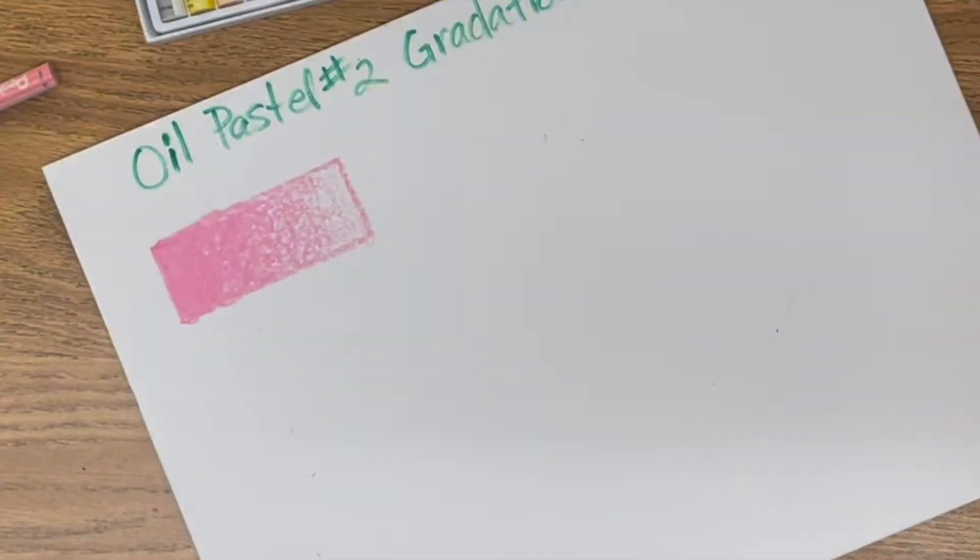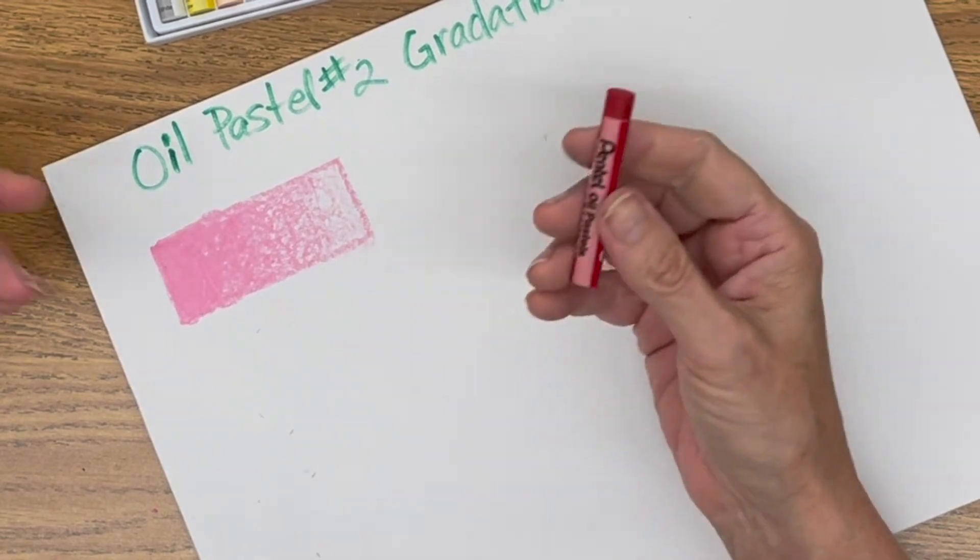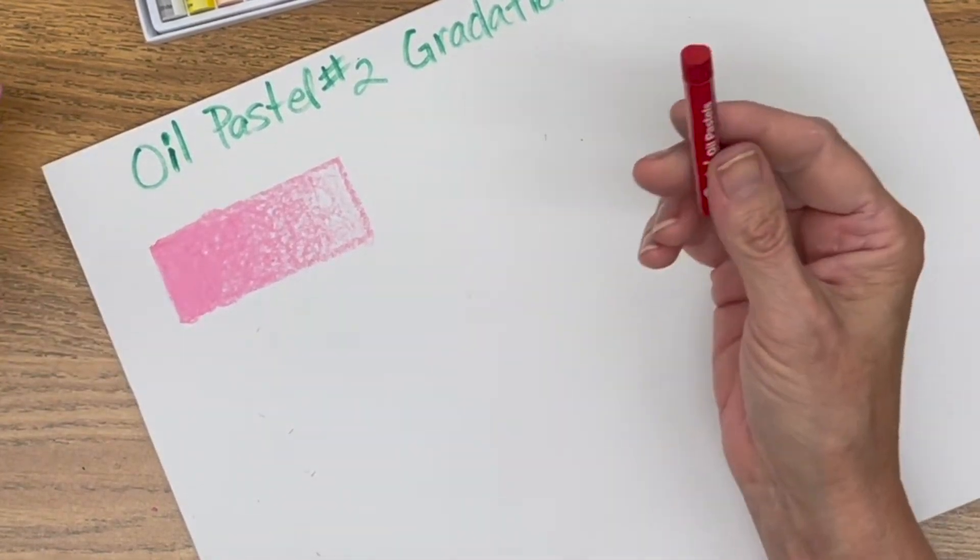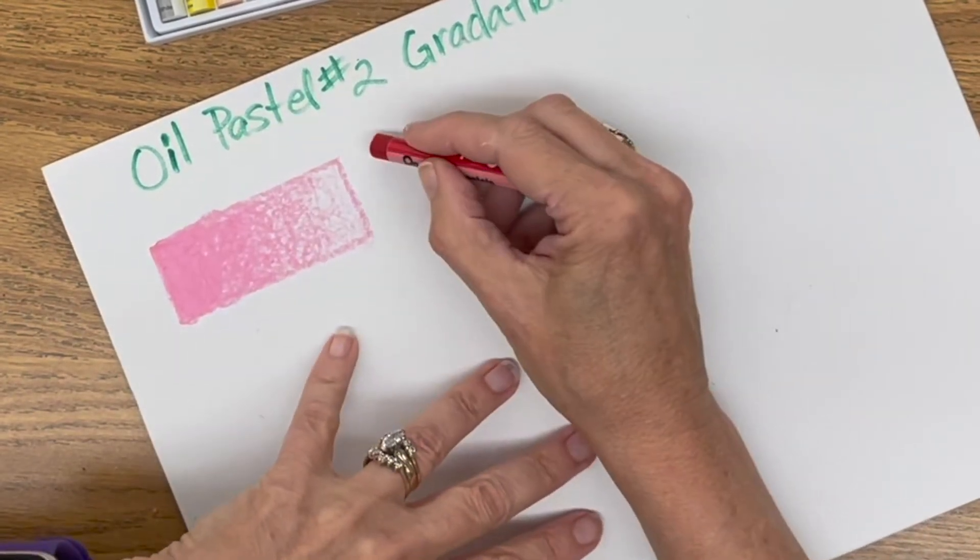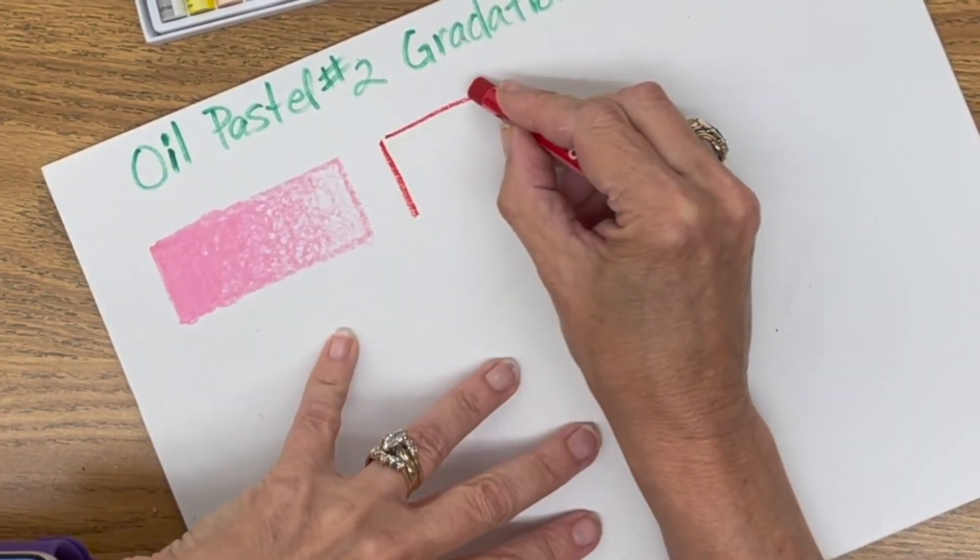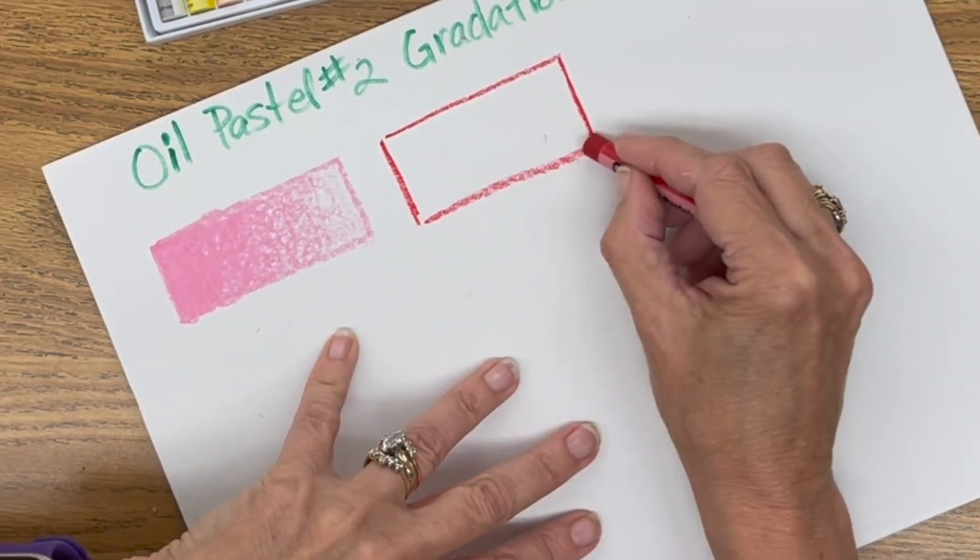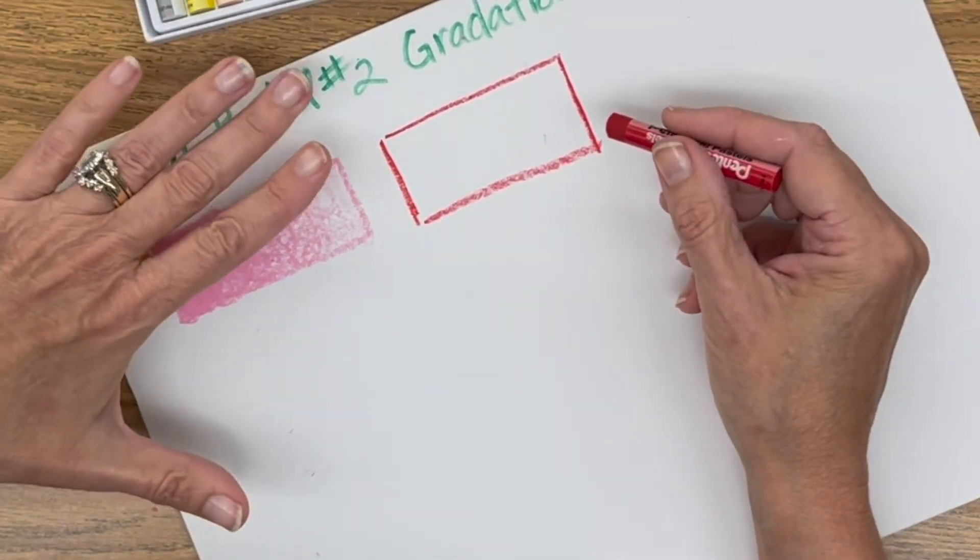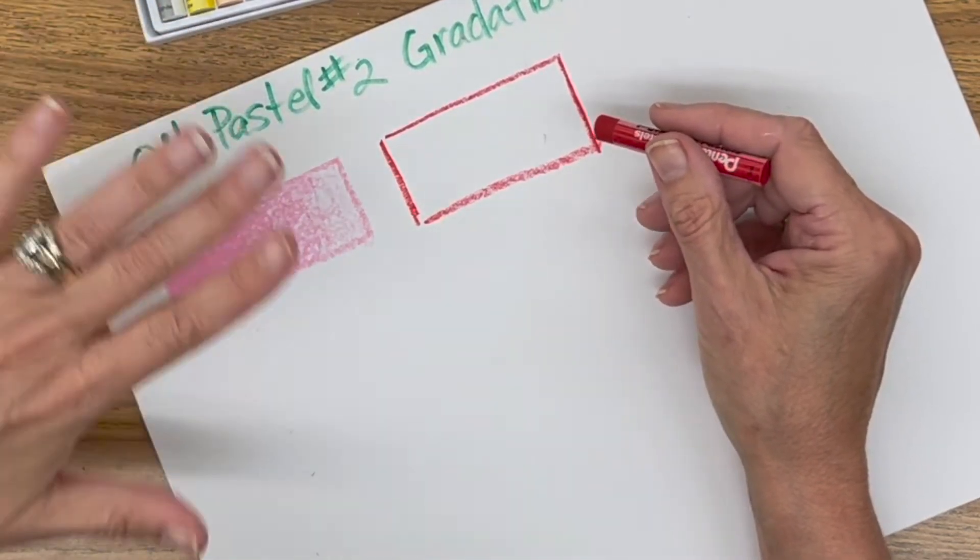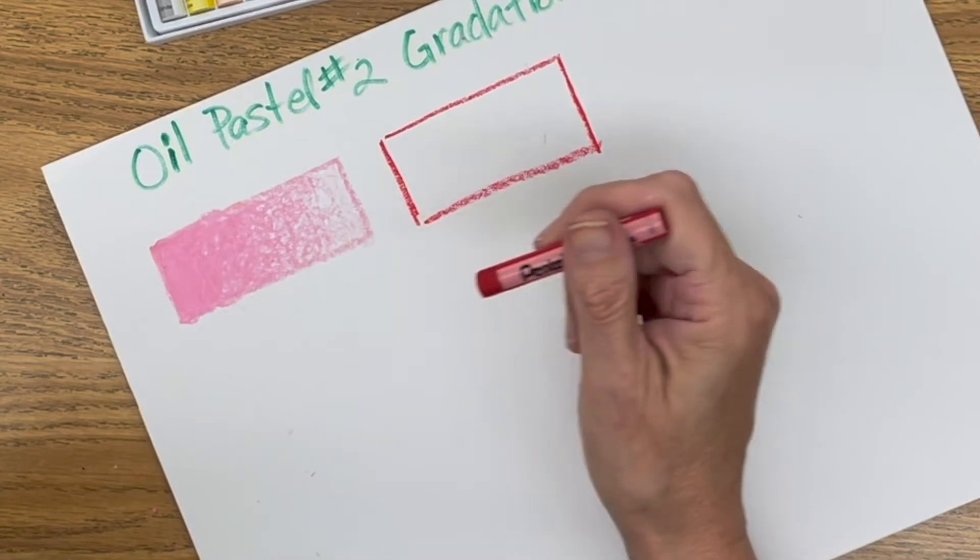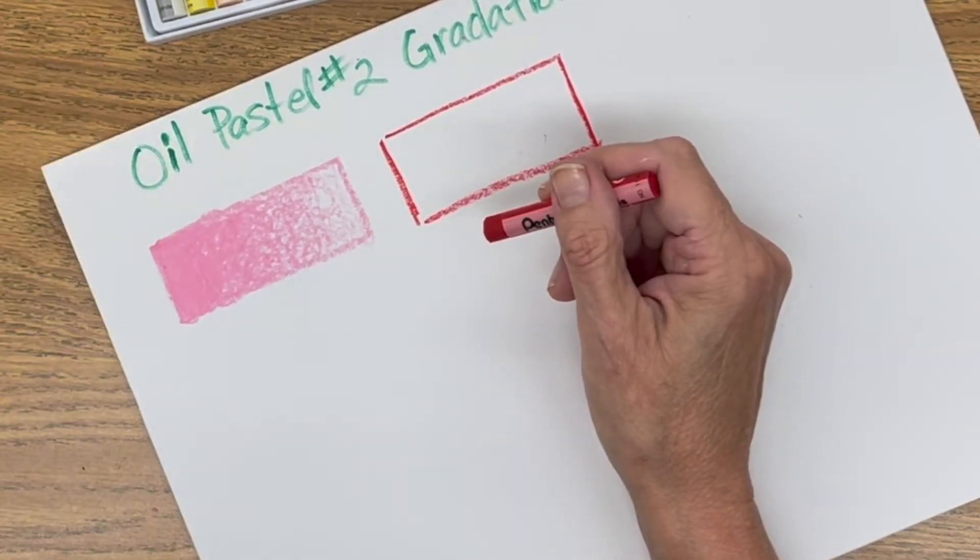Friction warms things up and oil, kind of like crayons have wax, oil pastels have oil in them to keep the color part together. And oil is softer than wax. So if we let it sit a minute, I can put more oil pastel on after it cools off because friction warms it up and that makes it soft.